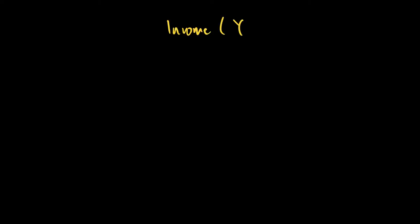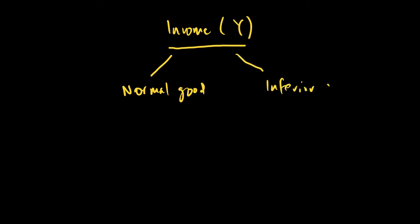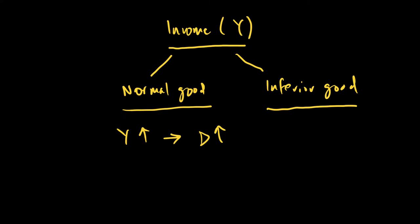Let's now look at factors that affect demand. The first factor is income — we use the symbol Y for income in economics. There are two kinds of goods affected by income: normal goods and inferior goods. A normal good is one where whenever income goes up, demand goes up. A good example is foreign vacation — if income for any individual goes up, their purchasing power increases and they may take a foreign vacation that was previously not possible.